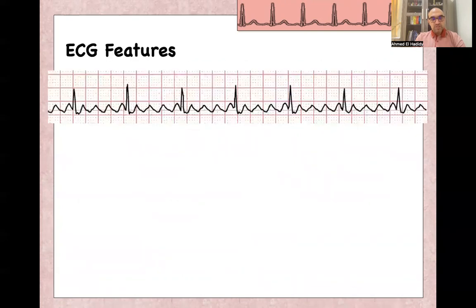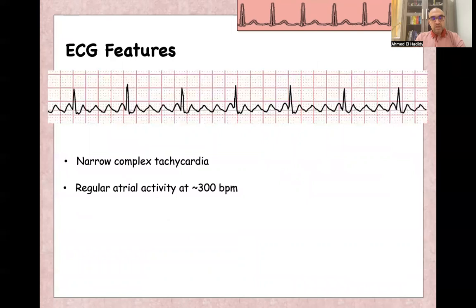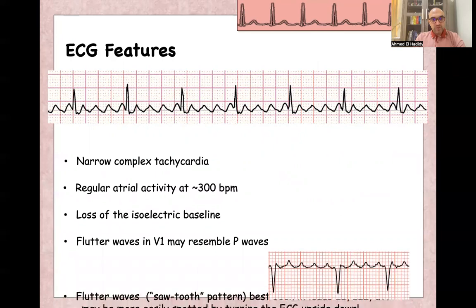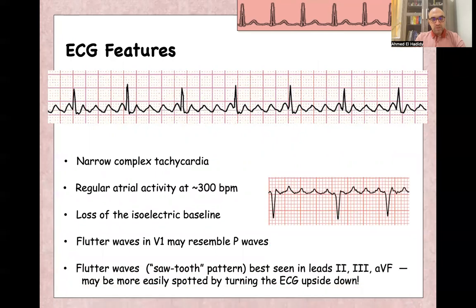As for ECG features of atrial flutter: it is usually a narrow complex tachycardia with regular atrial activity around 300 beats per minute and loss of isoelectric baseline. Flutter waves in V1 may resemble P waves and give a sawtooth pattern, which is best seen in leads 2, 3, and aVF.